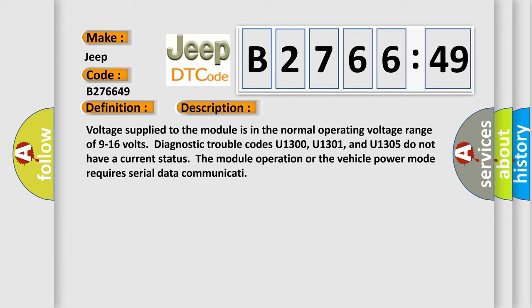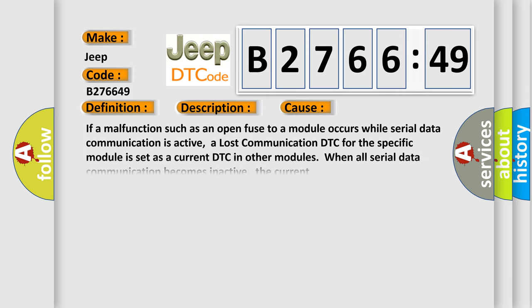Voltage supply to the module is in the normal operating voltage range of 9 to 16 volts. Diagnostic trouble codes U1300, U1301, and U1305 do not have a current status. The module operation or the vehicle power mode requires serial data communication.